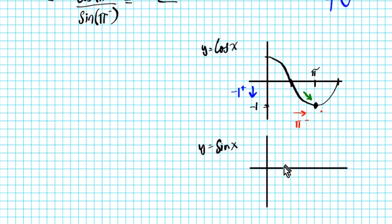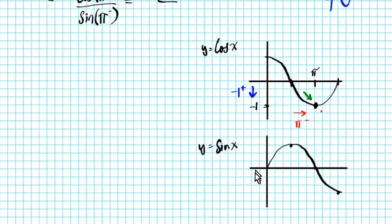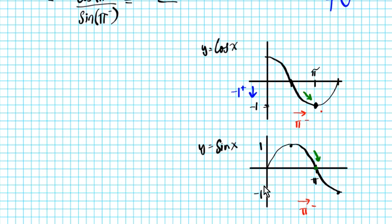The sine graph looks like S's. The sine wave oscillates between one and negative one, just like the cosine graph. Pi is marked on the axis. As we approach pi from the left along the sine graph, we are descending towards that point, and the y-coordinate of that point is zero — we're approaching zero from above.